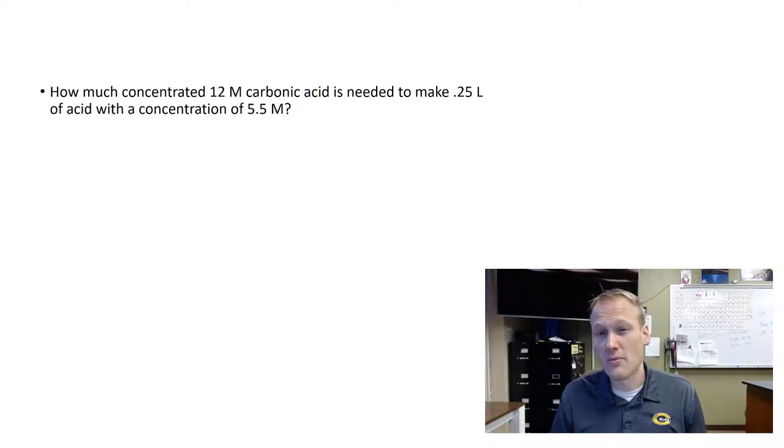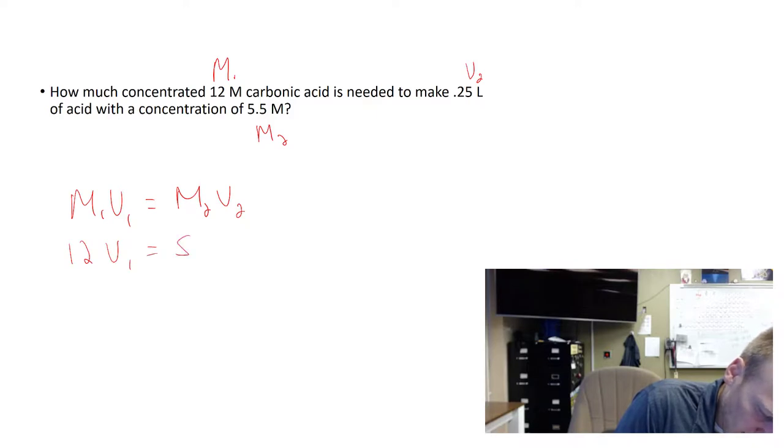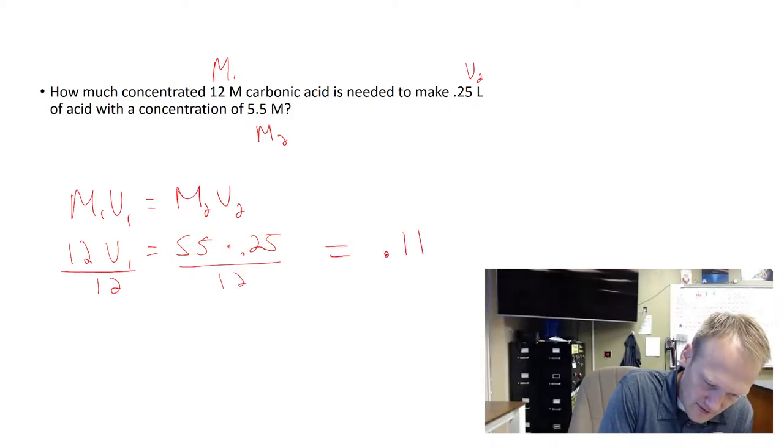So in this situation, we have 12 molar carbonic acid. That's a very strong acid, potentially very dangerous. And I need to make 0.25 liters of acid with the concentration of 5.5. So we would label this as M1. These two numbers go together. So this would be V2 and M2. Remember M1V1 equals M2V2. So M1 is 12 times V1, which I don't know. And I'm looking for 5.5 molar and I need 0.25 liters of that. So to solve for V1, I'm going to divide both sides by 12, and it gives me 0.115 liters.